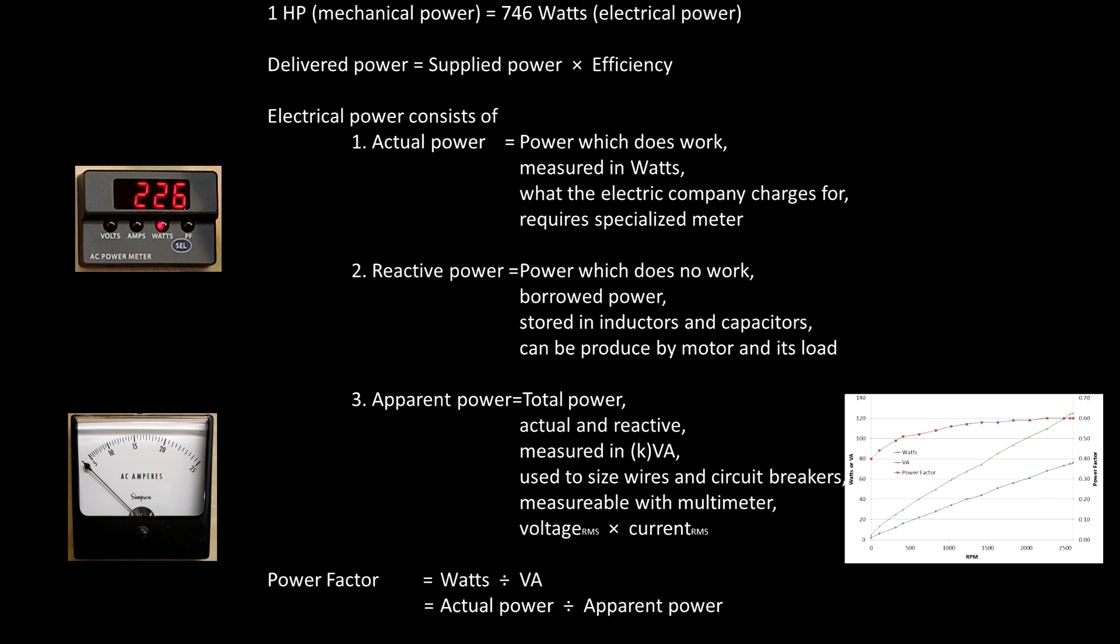Apparent power is the total power delivered, including actual and reactive power. Apparent power is measured in kVA or kilovolt amp and is used to size wires and circuit breakers. Unlike watts, basic multimeters can be used to calculate kilovolt amps by measuring and multiplying RMS voltage and current.